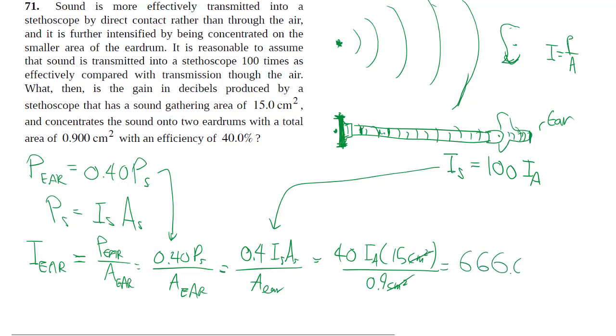So we can see that the intensity picked up by the ear through the stethoscope is 666 times of that without the stethoscope.